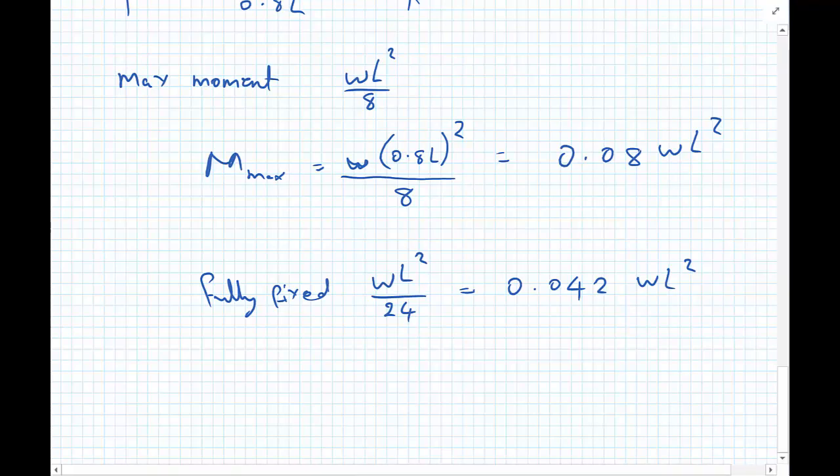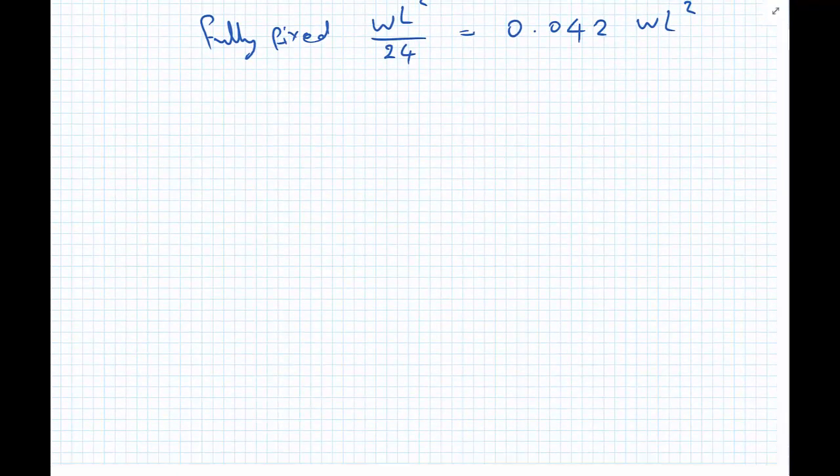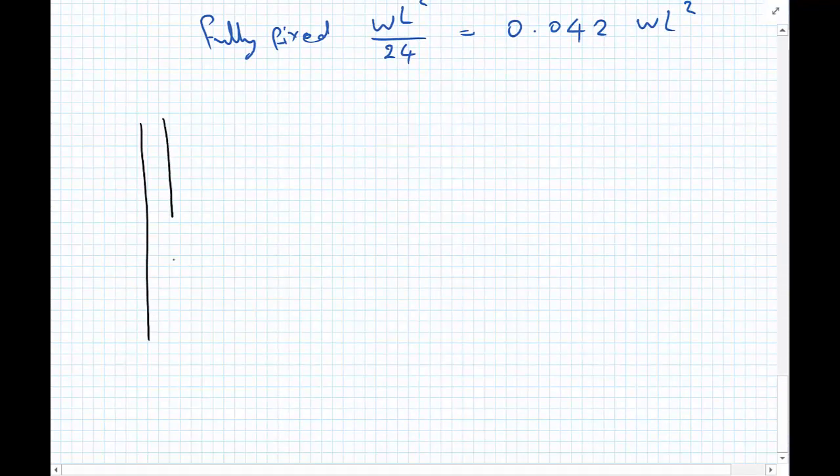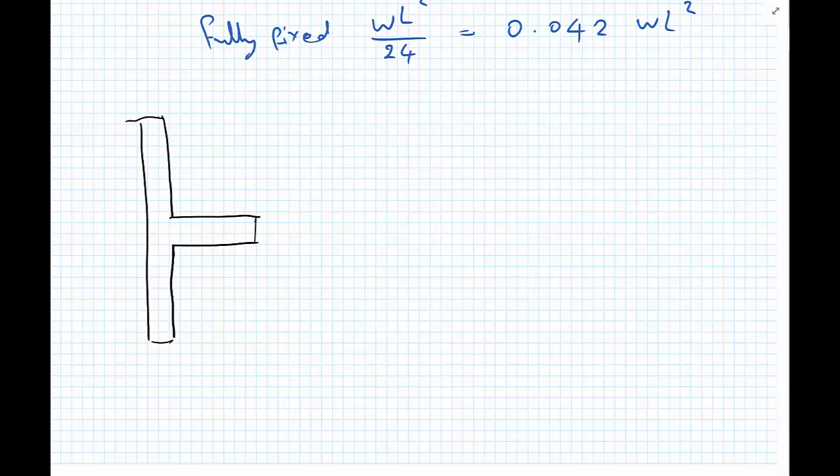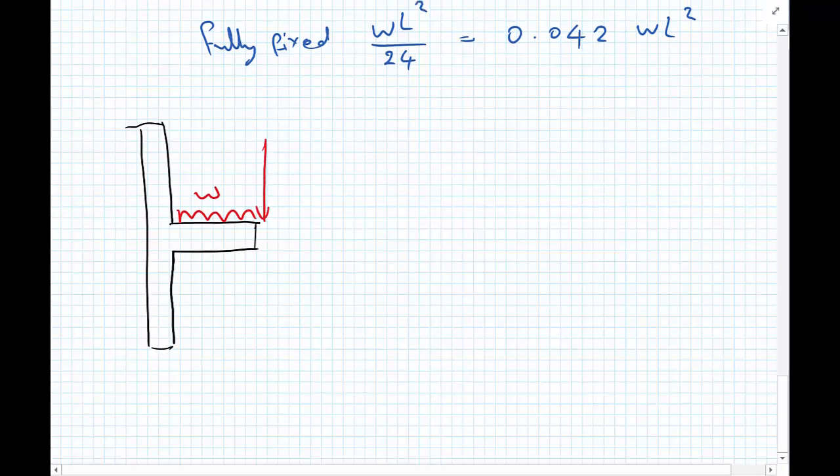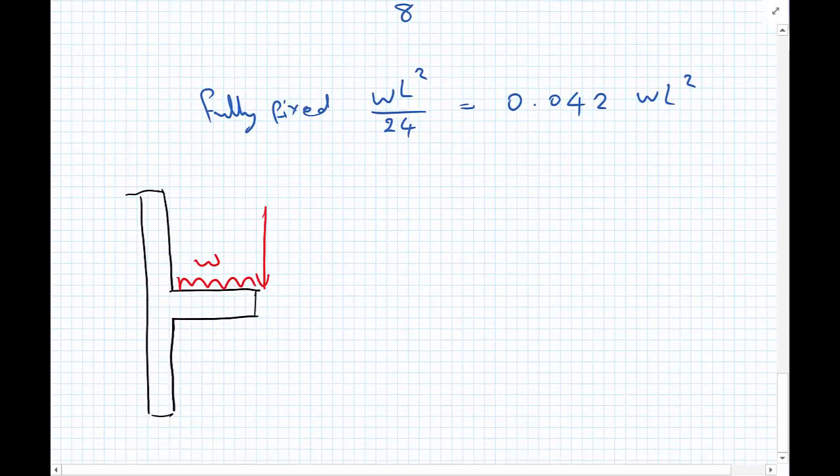So quickly examining what happens at the intersection of our beam and our column. We have a portion of beam that still has a bit of loading W on there. We have the loading coming from the 0.8L of beam, so that's 0.4WL. And we have a distance of 0.1L.